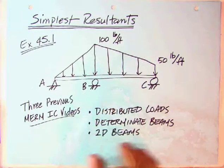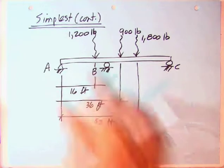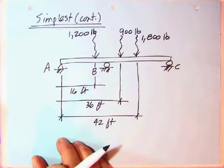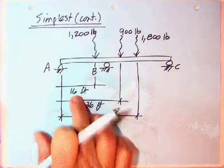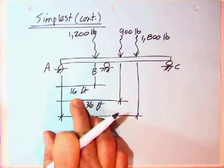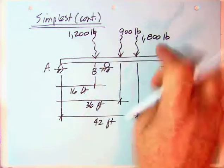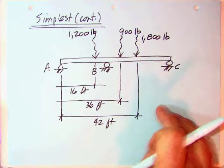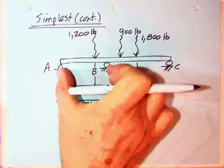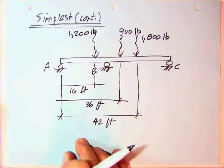Okay, from the distributed load video, this is a summary of what we found. We found 1,200 pounds was the triangular part, and it was located 2 thirds the distance from A to B, 16 feet. Then F2 was the rectangular load here between B and C, and that's 1,800 pounds, and it was located halfway in between, but you've got to add A, so that's at 42 feet.